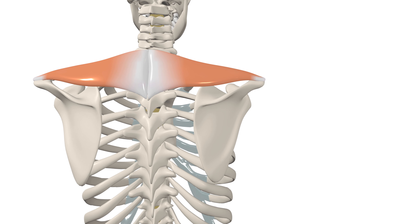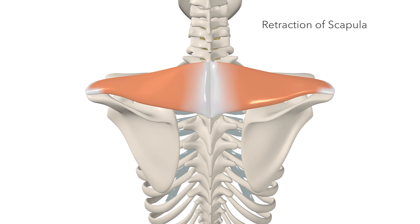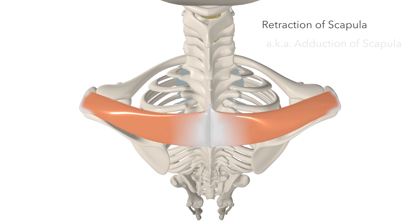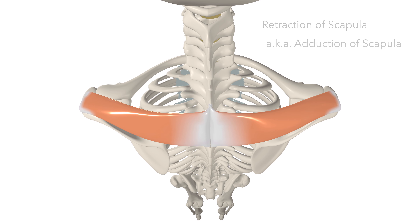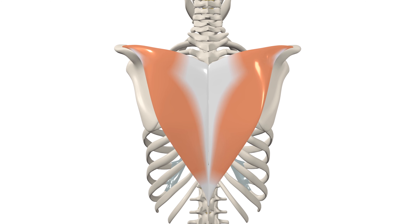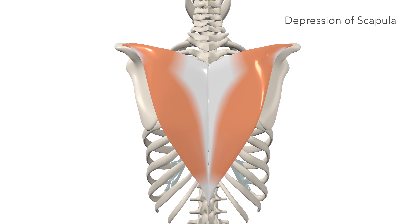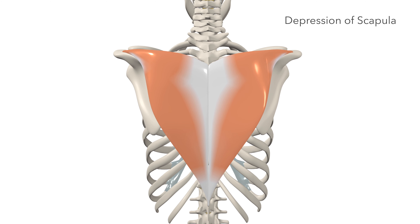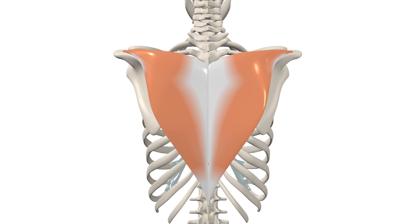The middle fibres also perform retraction of the scapula, also known as adduction of the scapula. The lower fibres depress the scapula — for example, when you're pushing yourself up out of a chair, the lower fibres of the trapezius contract to pull the scapula down.